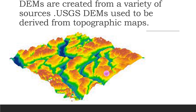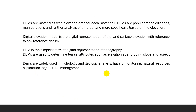USGS DEMs used to be derived from topographic maps. Basically, DEMs are raster files with elevation data for their raster cells. DEMs are popular for calculations, manipulations, and further analysis of an area, more specifically based on elevation. A digital elevation model is the digital representation of the land surface elevation with reference to any reference datum.